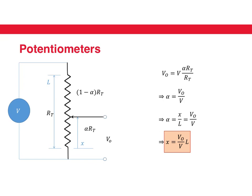If you do some math, it's fairly straightforward. If I leave you to work it out, you can see that you can get x, which is the displacement of the wiper from one end of the potentiometer, as a function of the output voltage. Therefore, if you measure the output voltage, you can get the displacement of the potentiometer.